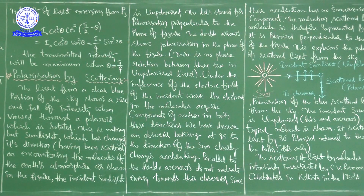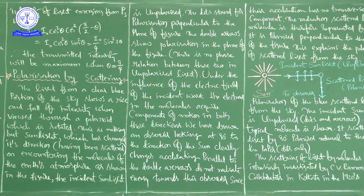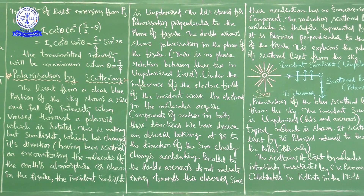Scattering means reflecting into many directions. The light falls on water molecules or air molecules in the atmosphere and scatters in different directions — that is why the driver cannot see the object in front. In case of polarization by scattering, when unpolarized incident sunlight meets an atmospheric molecule, the light will scatter. What happens to the scattered light and how it polarizes — that is our discussion.